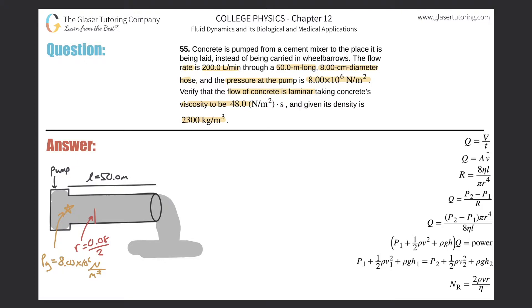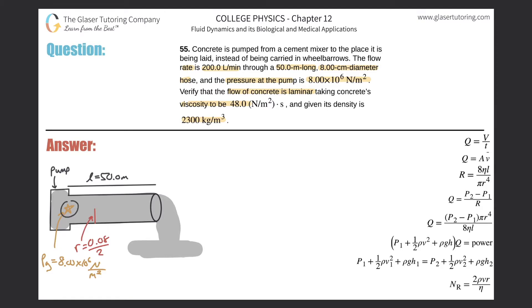If you just want the answer feel free to skip, but if you want to learn something, stick with me. They tell us the length of the pipe and the gauge pressure at the pump. Gauge pressure is essentially the pressure inside the tube neglecting air pressure on the outside. There has to be a pressure differential in order for flow to even occur — if pressure is the same at both ends, no flow happens.